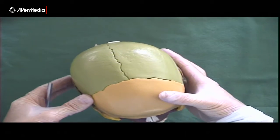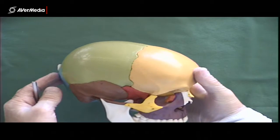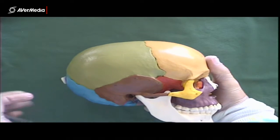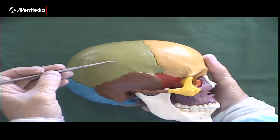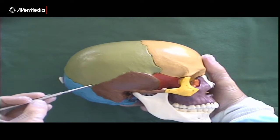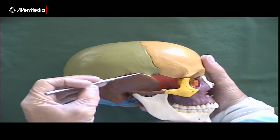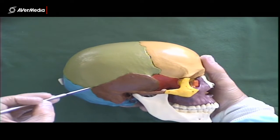If we look to a lateral point of view on this colored skull, we can see here between the temporal and parietal bones a squamous suture. That's the one you can see there.